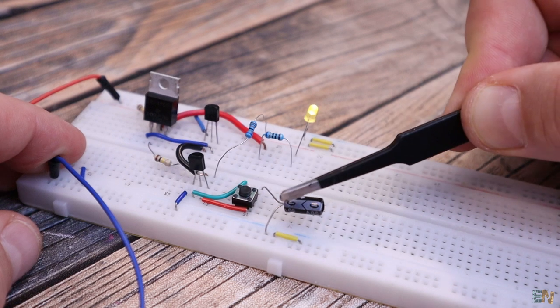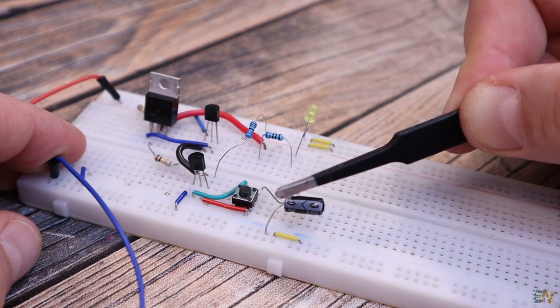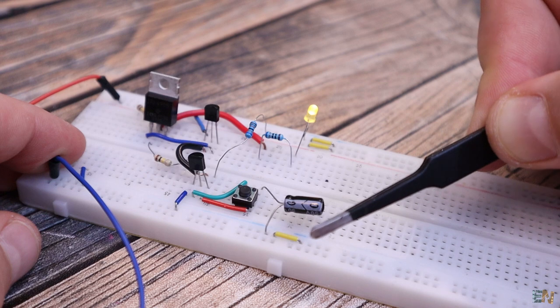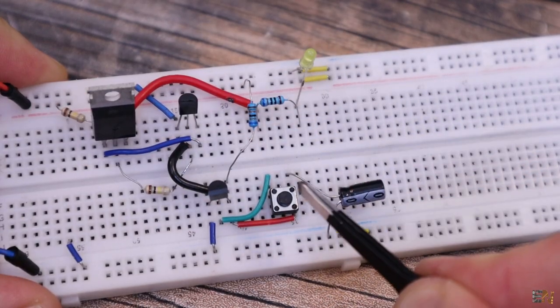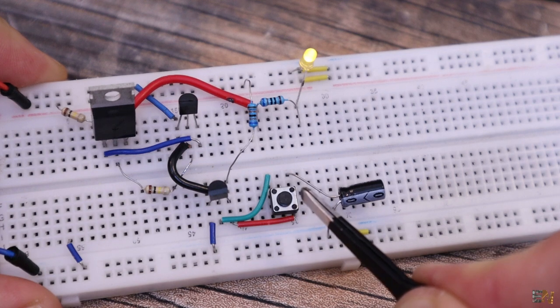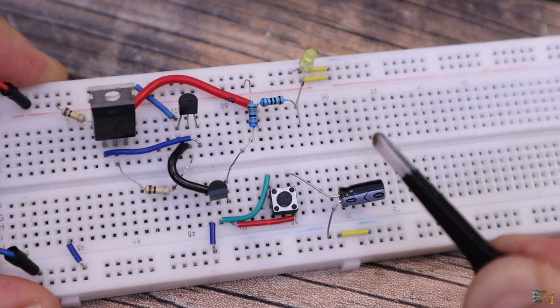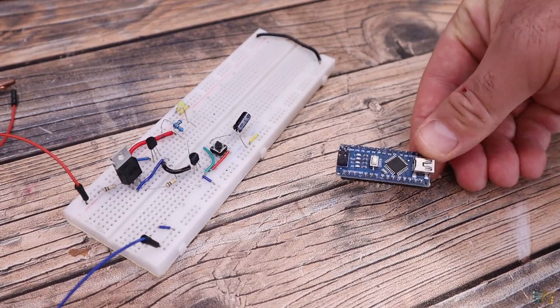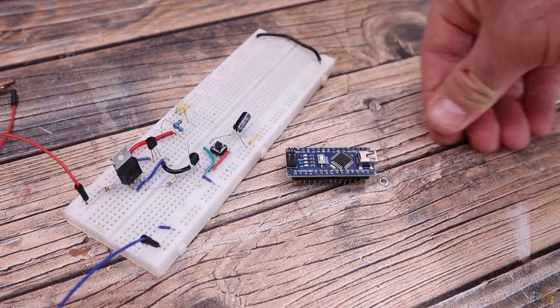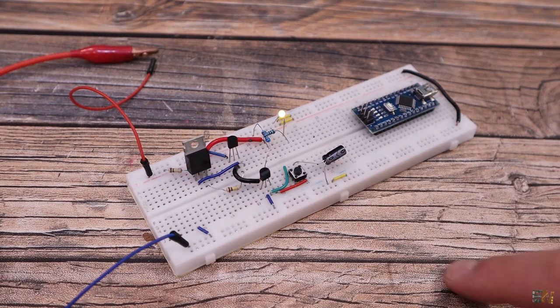We press once, we turn ON the circuit. We press a second time and we turn it OFF and we can do this how many times that we want. But hey, in my case I want to control the OFF process with my microcontroller without having to press the push button a second time.